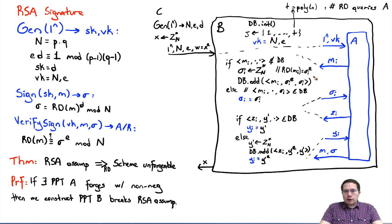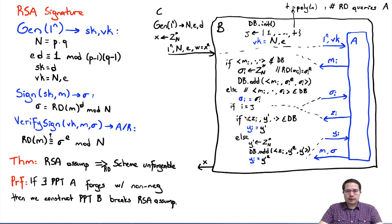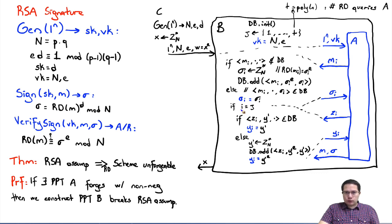We are going to pick a value j randomly between 1 and t, where t is some polynomial in the security parameter n. This t is an upper bound on the number of random oracle queries that A is going to make. We pick one of these queries as a special query, and if we are at query number j, we do something interesting.